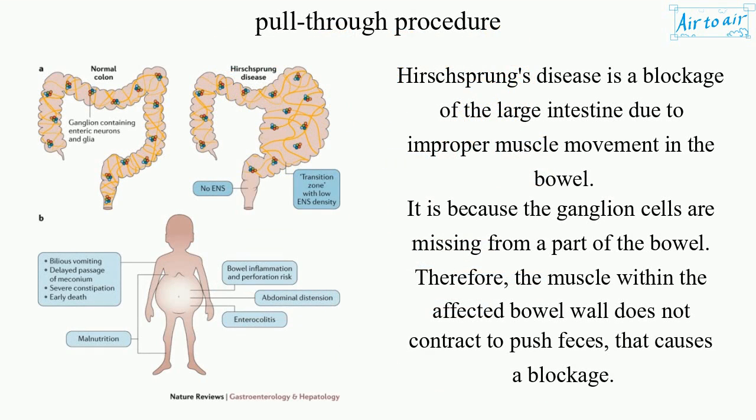Hirschsprung's disease is a blockage of the large intestine due to improper muscle movement in the bowel. It is because the ganglion cells are missing from a part of the bowel. Therefore, the muscle within the affected bowel wall does not contract to push feces, causing a blockage.